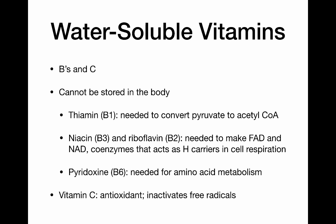B1 is thiamine, and it is needed to convert pyruvate into acetyl-CoA — that's a vitamin B1-dependent step. Remember, the conversion of pyruvate to acetyl-CoA happens in the cytoplasm of the cell and is what allows acetyl-CoA to enter into the Krebs cycle. So it's a really important pre-Krebs cycle vitamin, and really important for energy production ultimately.